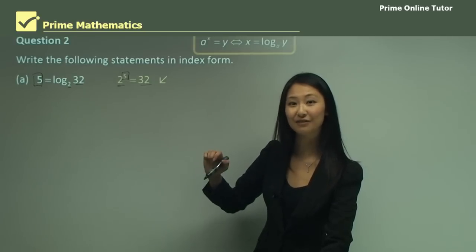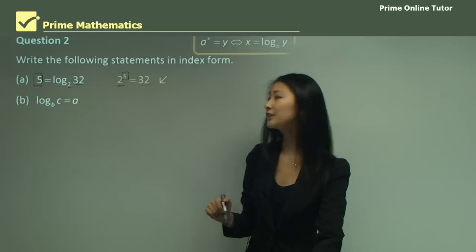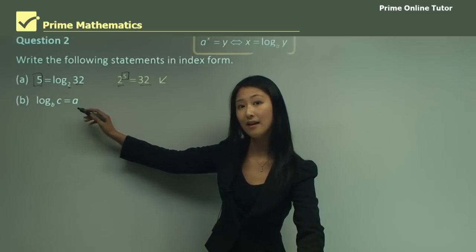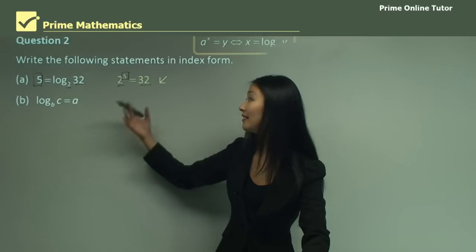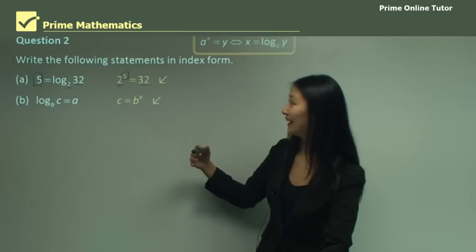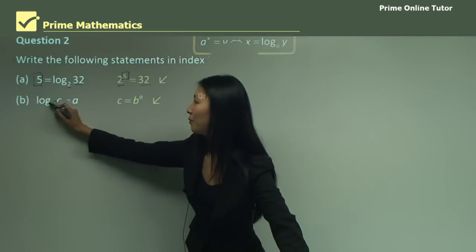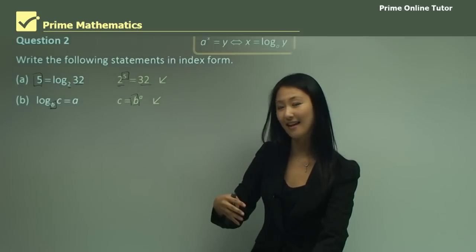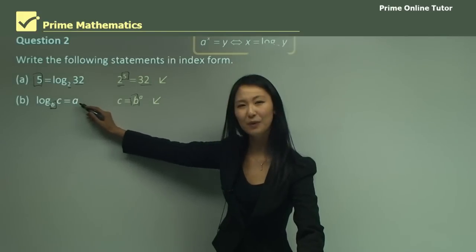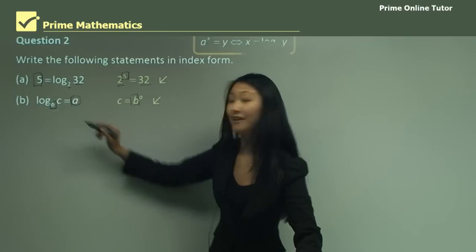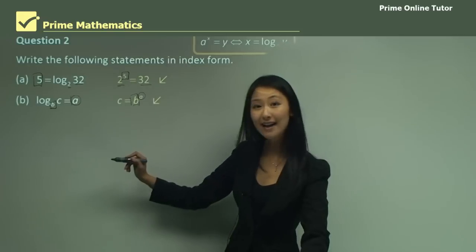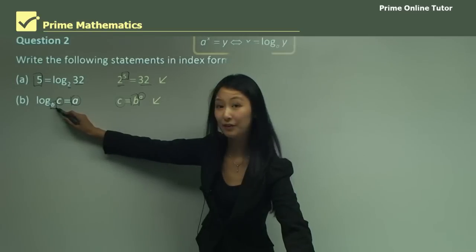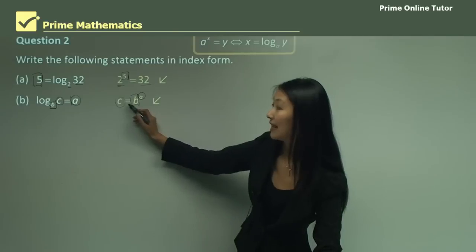Questions like this often come up in exams where letters like A, B, and C are used instead of numbers — don't get confused by that, we still use the same principles. The base of the logarithm is B, so B becomes the base of the index. Since the logarithm equals A, A becomes the index. Finally, C moves over, giving us B to the power of A equals C.